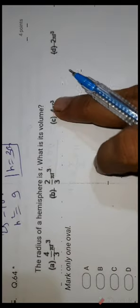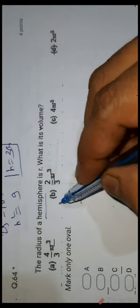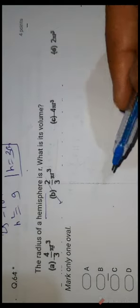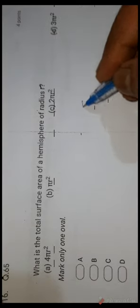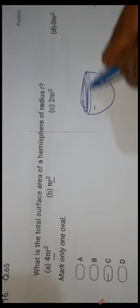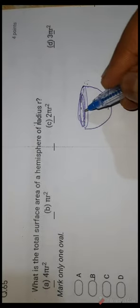Question number 64: radius of hemisphere is r, find its volume. Volume of hemisphere = (2/3)πr³. So B is correct. Question number 65: total surface area of hemisphere of radius r. TSA = curved surface area + base area = 2πr² + πr² = 3πr². So D is the correct answer.